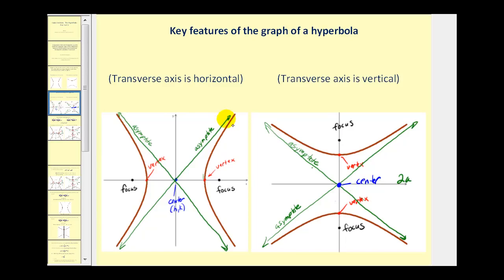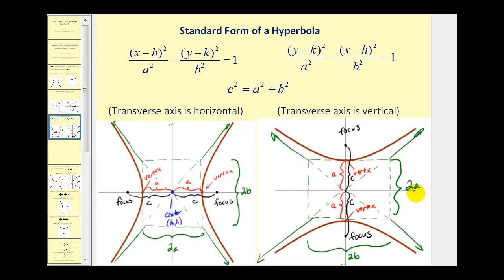Lastly, you'll see these green lines called asymptotes. These are lines that the hyperbola approaches but will not cross, and they are very helpful when making the graph. Let's take a look at how we can determine all of these key components when the graph is in standard form. This is a busy diagram but it contains everything you need to know in order to graph a hyperbola in standard form.